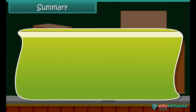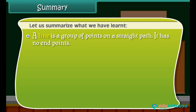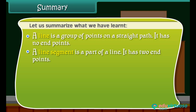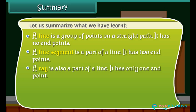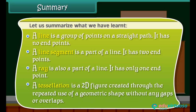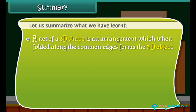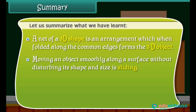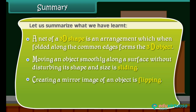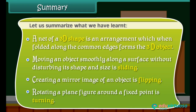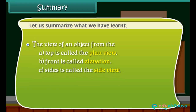Summary: A line is a group of points on a straight path with no end points. A line segment is a part of a line with two end points. A ray is a part of a line with only one end point. A tessellation is a 2D figure created through the repeated use of a geometric shape without any gaps or overlaps. A net of a 3D shape, when folded along common edges, forms the 3D object. Sliding is moving an object smoothly along a surface without changing its shape. Flipping is creating a mirror image. Turning is rotating a plane figure around a fixed point. The view from the top is the plan view, from the front is elevation, and from the side is the side view.